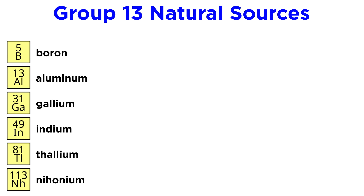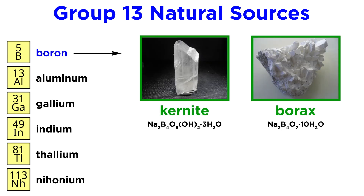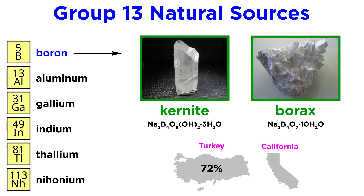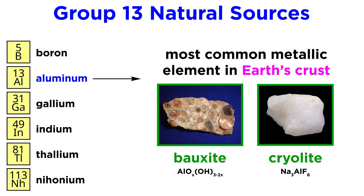In terms of availability, boron is found in ores like kernite and borax. Turkey holds about 72% of the boron deposits in the world, though California also houses a significant share. Aluminum is the most common metallic element on earth, found primarily in the ore bauxite, which is prevalent in earth's crust, but also in cryolite.